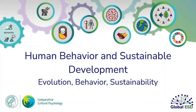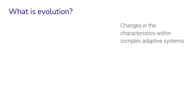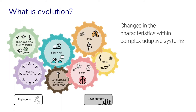Welcome back to Human Behavior and Sustainable Development. This week we're talking about evolution, behavior, and sustainability. This is Part Two of exploring the big question: what is evolution? In Part One we learned that we can think about evolution as changes in characteristics within complex adaptive systems — so more than simply changes in genes. We can think about evolution as including changes in genes, bodies, brains, technology, knowledge, behaviors, social organization, biotic, and even abiotic environments that are part of interacting systems, and we can look at this over generations of organisms but also within the lifetime of an organism.